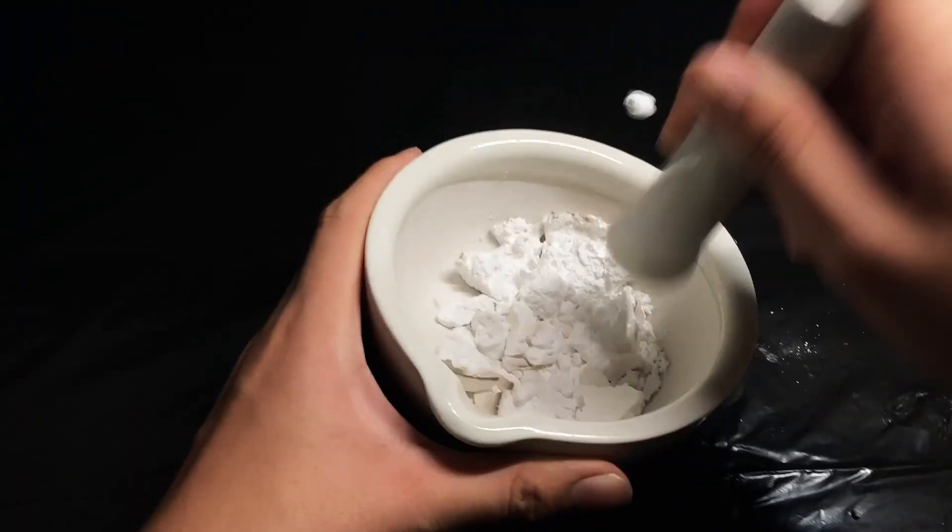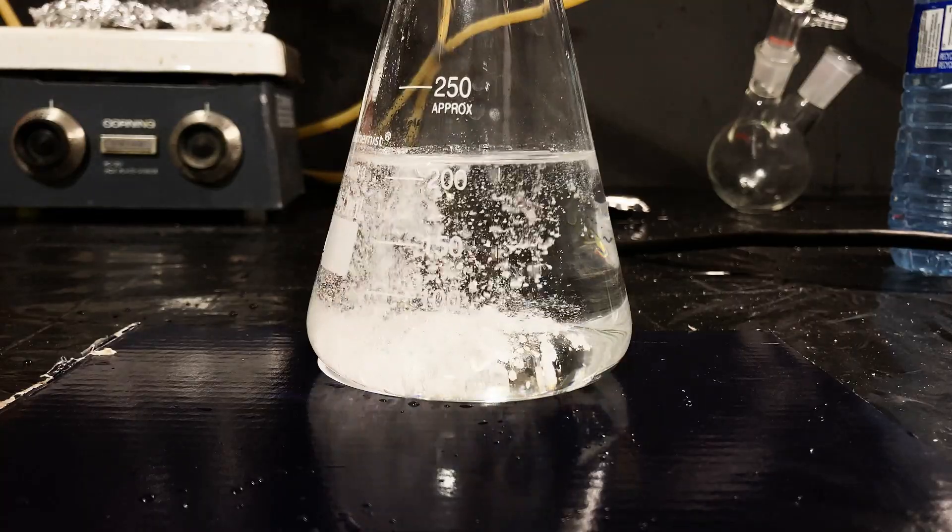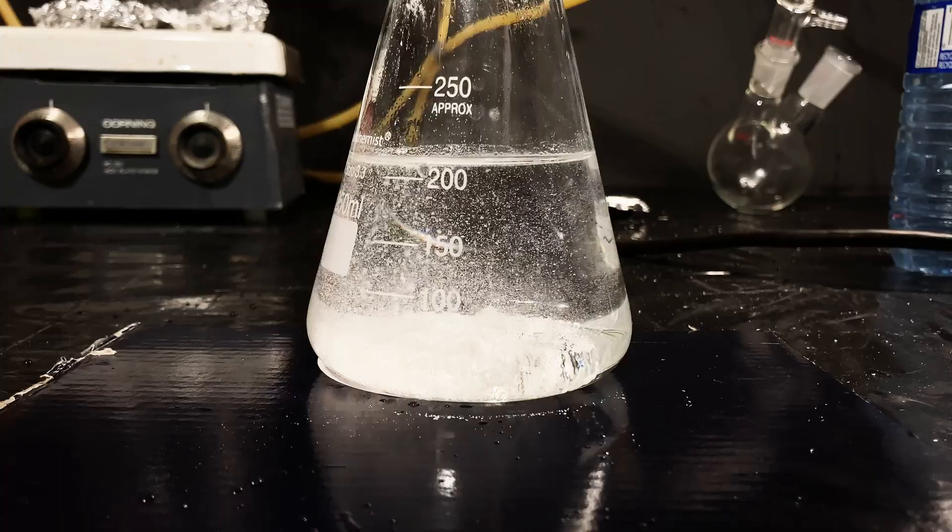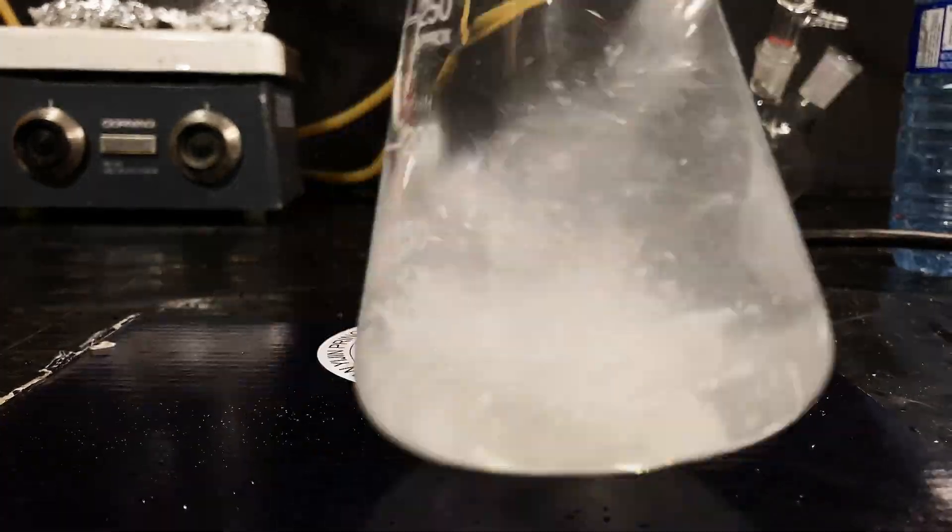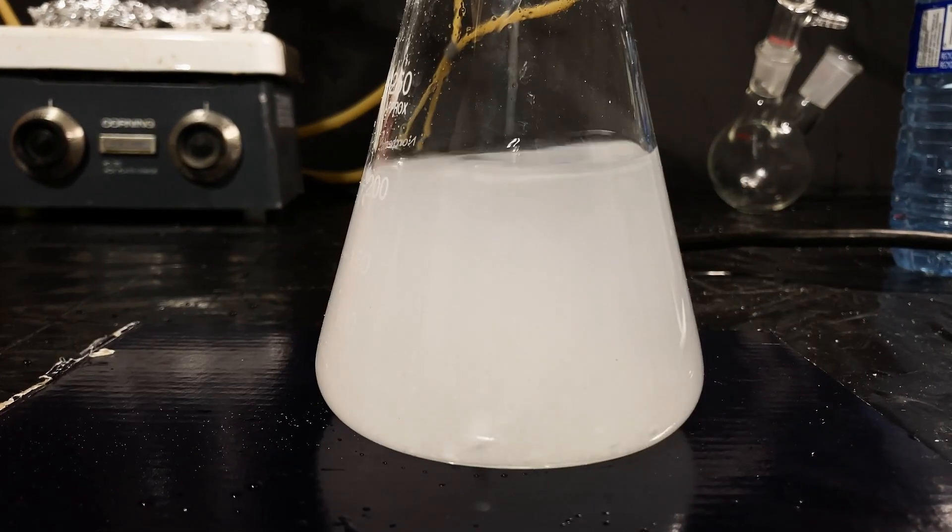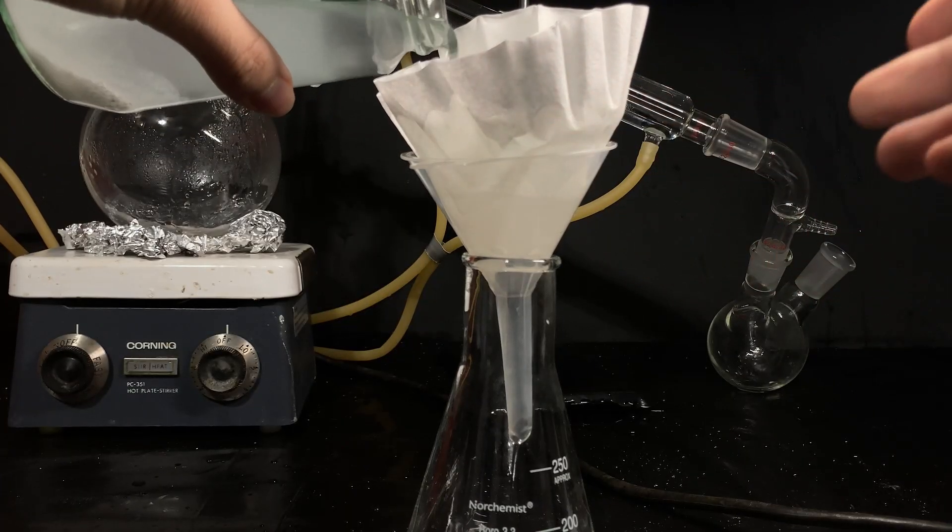Then, to dry it off, I dumped into the solution a drying agent called anhydrous magnesium sulfate that I made in an earlier video. This soaked up all the water that was present in the azeotrope. And just a quick tip, I can tell when I've added enough of the salt if I swirl it around and it forms a suspension, rather than clumping at the bottom. The salt can then be filtered off.